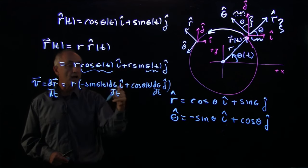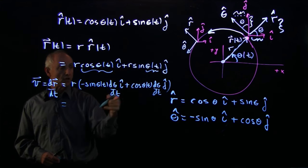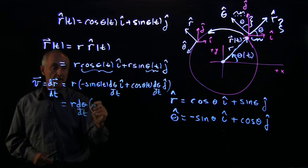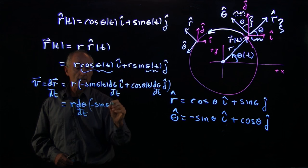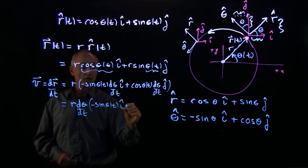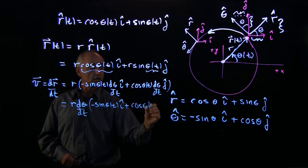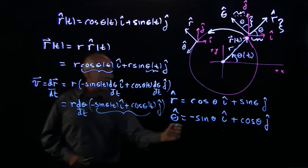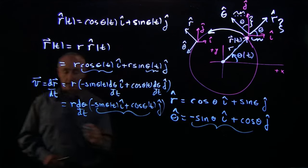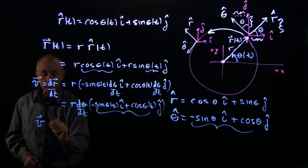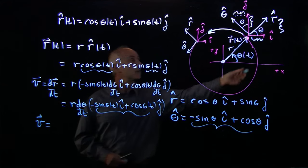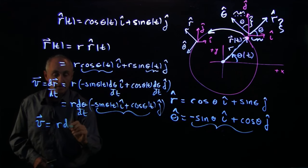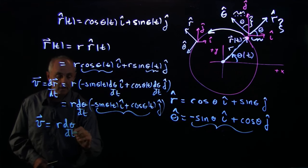Now, notice that I can pull out the common term d theta dt. So I have r d theta dt. And I have minus sine theta of t i hat plus cosine theta of t j hat. And if you'll notice, this is exactly the unit vector theta hat. So we can write our velocity vector for this object that's moving in a circle as r d theta dt theta hat.